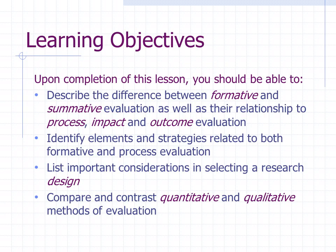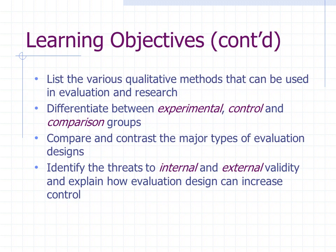Here are the learning objectives for the class: being able to describe the difference between formative and summative evaluation, as well as the relationship to process, impact, and outcome evaluation — the last three phases of the PRECEDE-PROCEED model on the PROCEED side. Identifying the elements and strategies used in formative and process evaluation, listing important considerations in selecting a research or evaluation design, comparing and contrasting quantitative and qualitative methods, listing various qualitative methods, differentiating between experimental control and comparison groups, comparing major types of evaluation designs, and identifying threats to internal and external validity.